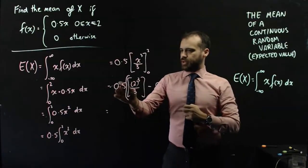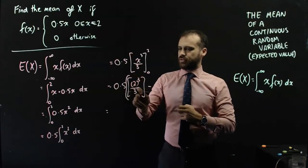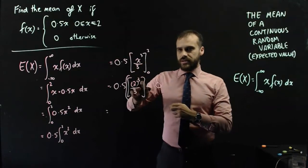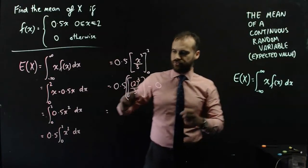Okay, now, 0.5, that's 8 over 3. 8 over 3 times 0.5 is 4 over 3.